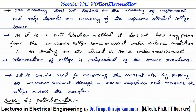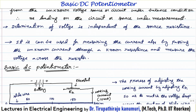Since it is not taking any power from the source, the loading effect on the circuit will be zero. This is another advantage of null detection-based methods. The determination of voltage is also independent of the source resistance — that is another advantage; it is not going to be affected by the source resistance of the voltage source.